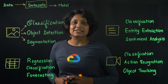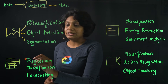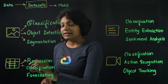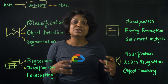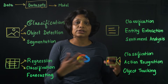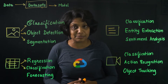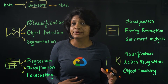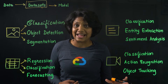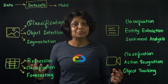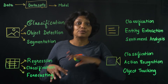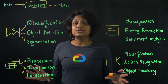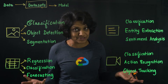Tabular data sets currently support regression, where you predict a numerical value, and classification, where you predict a category associated with a particular example. Forecasting is where the model predicts the likelihood of certain events or demands — for example, you want to predict sales over a period of time. Tabular data sets support hundreds of columns and millions of rows.